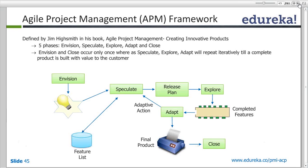Once the complete cycle of Explore, Adapt, and Speculate is finished, you close the project. You have a sign-off. So these are the five phases of APM: Envision, Speculate, Explore, Adapt, and Close.